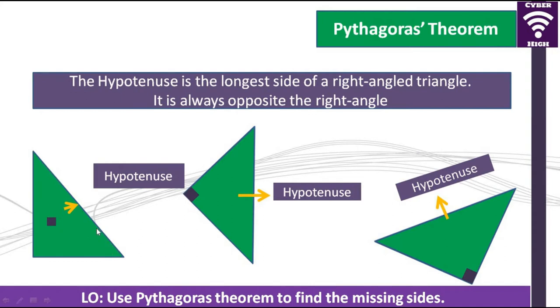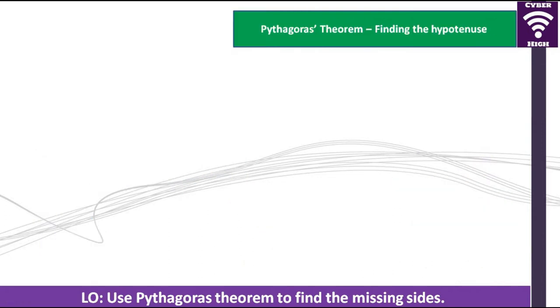As you can see in this diagram, it happens to be the longest side. Now we are going to apply the Pythagoras theorem to find the length of the hypotenuse.